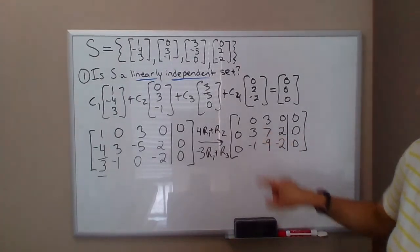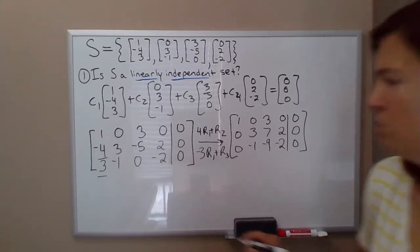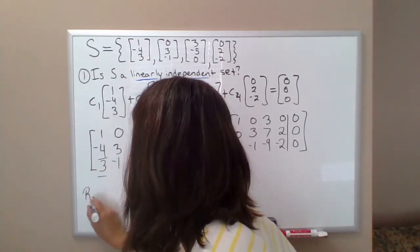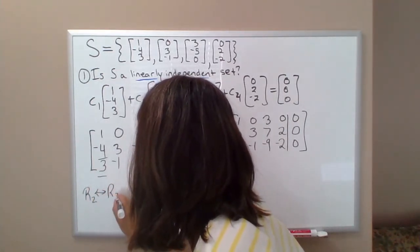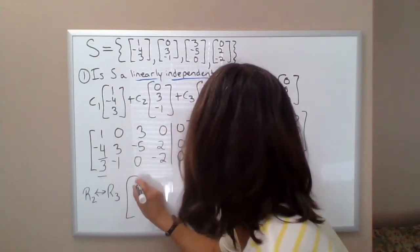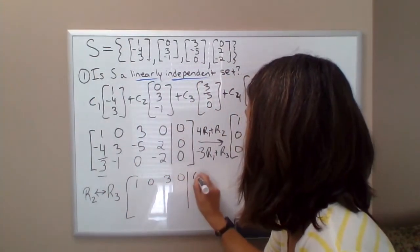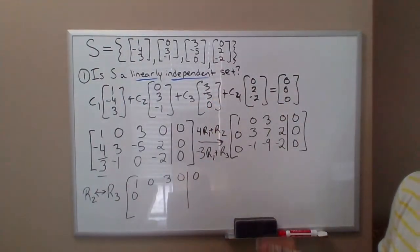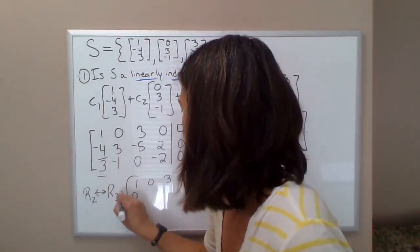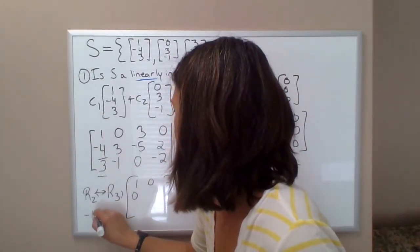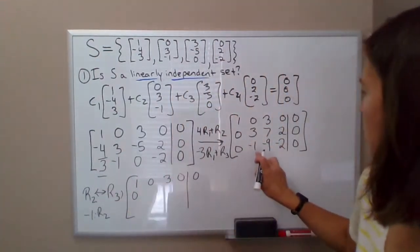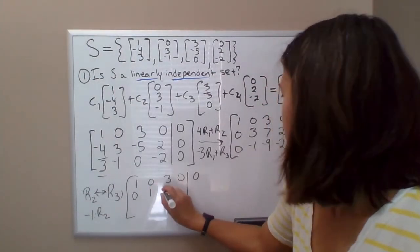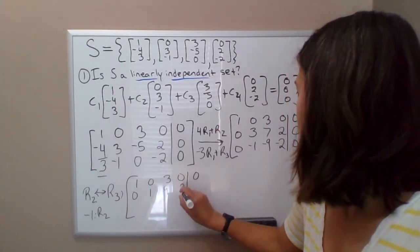So I would probably do a swap, swap row two and row three, let me see if you'll be able to see it down here. And then if you guys don't mind, to keep this video a little shorter, I'm going to also multiply a negative one times row two. So after I swap, this guy gets swapped up here, I'm going to multiply by negative one, so this becomes positive one, positive nine, positive two.